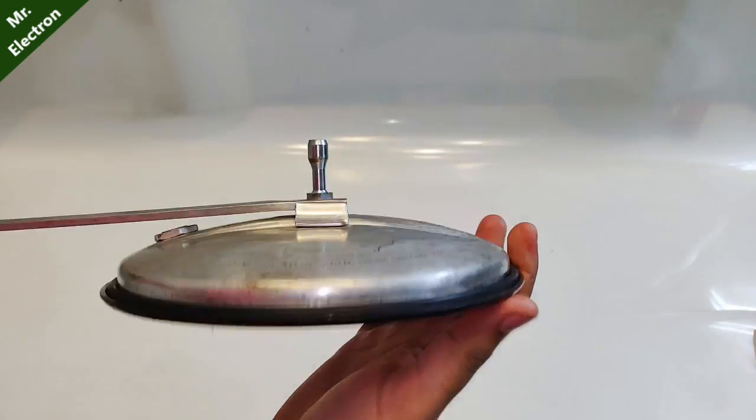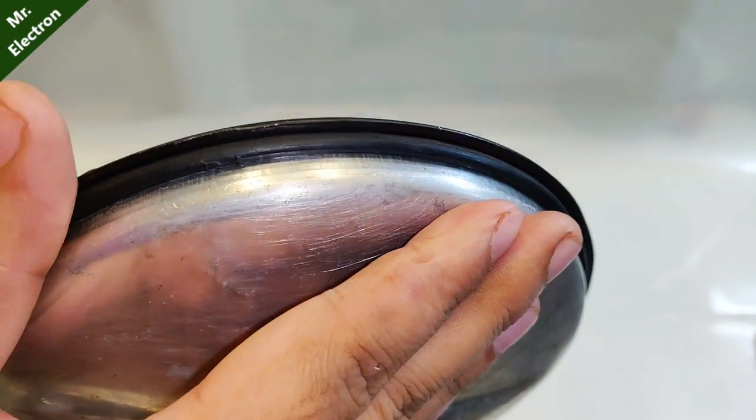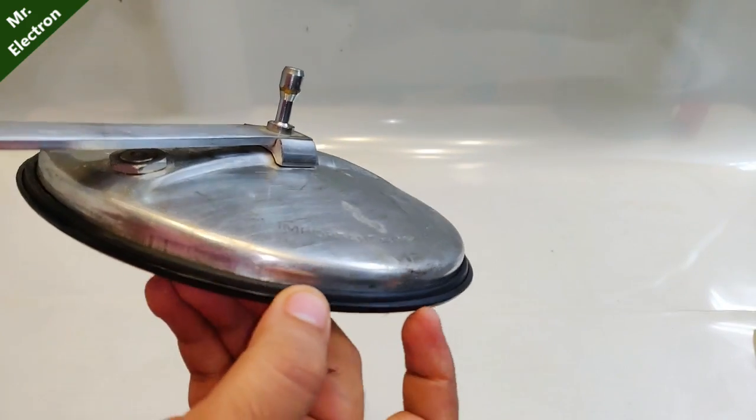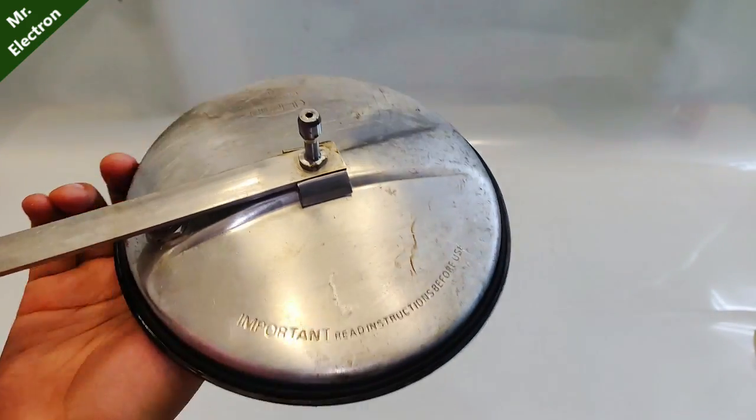On this pressure cooker cover I have also placed black insulation tape. Now why I have done that, you will understand it later in the video. Here as you can see the rubber belt is also placed here.